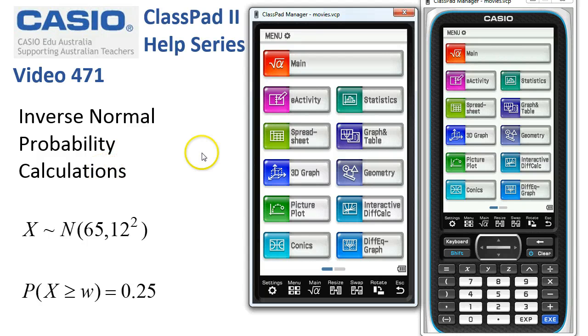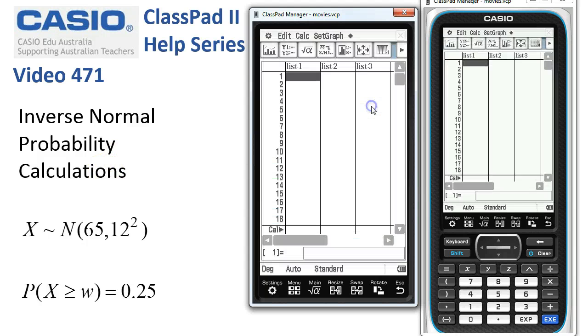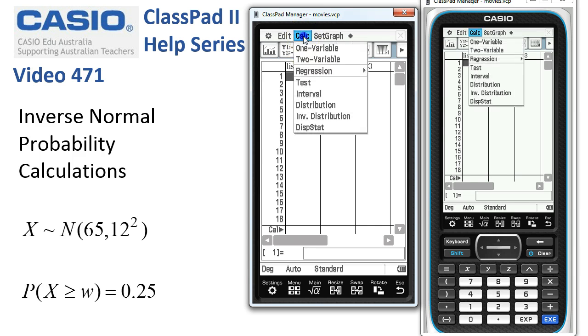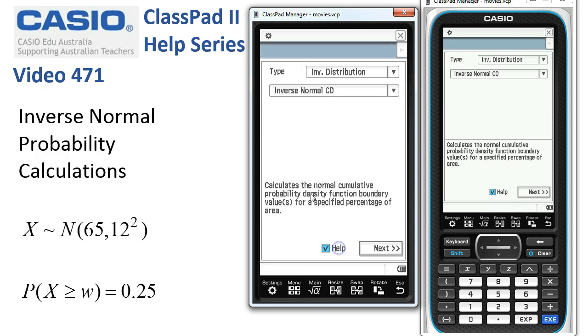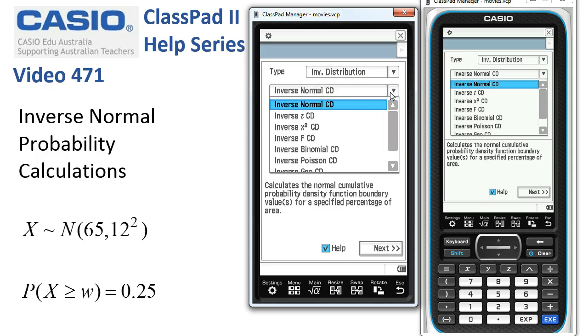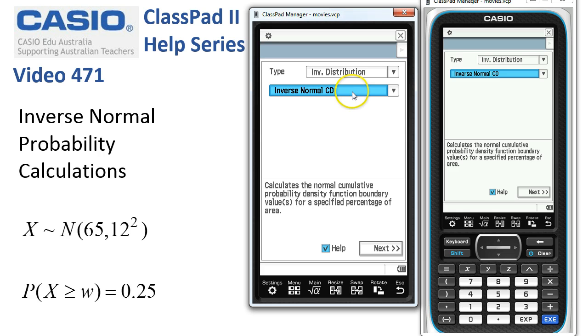Inverse normal probability calculations, this time we'll carry them out in statistics rather than in main. So we start in here and tap onto calc, and we're after inverse distributions. I always like to tap help when we look for our distribution function. They're normally a lot easier to find. Now, of course, the one we want here is the first one selected.